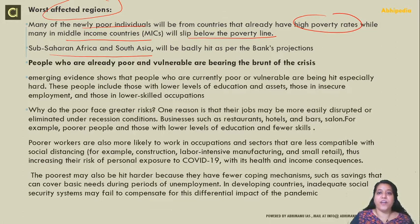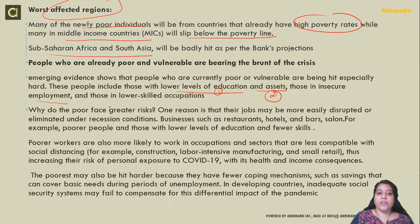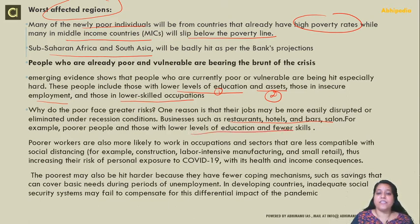Why are those who are already poor more vulnerable? Number one, they have low levels of education. Number two, they don't have assets to generate income. They don't have secure employment. They are in lower-skilled occupations — working in restaurants, hotels, and bars. When recession comes, lower-skilled workers are the first to be removed, and they don't have alternate jobs to fall back on.